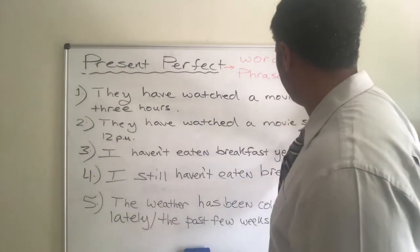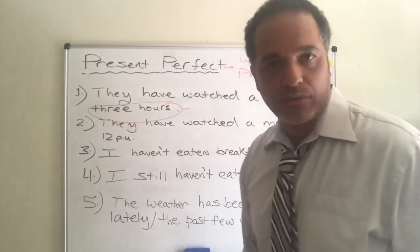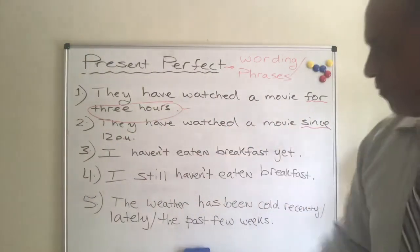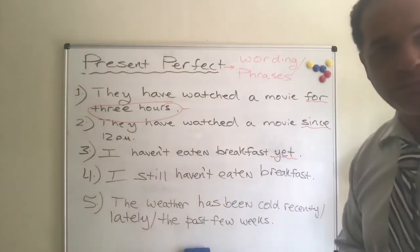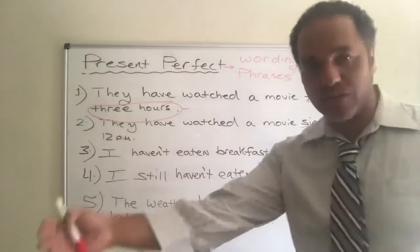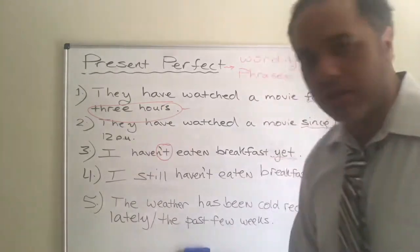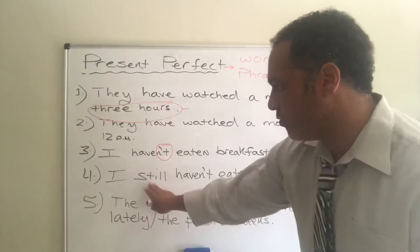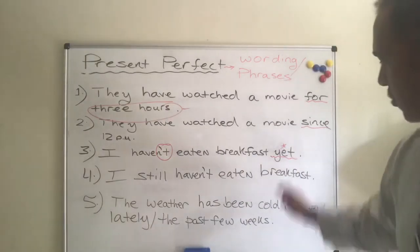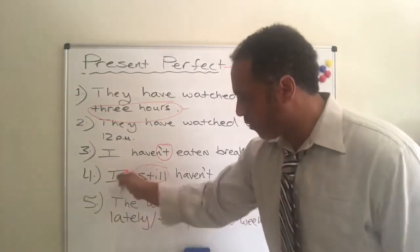When we use the word for, we are talking about an amount of time — for example, they have watched a movie for three hours. When we say since, it's a beginning time — they have watched a movie since 12 p.m. The word yet means something has not happened. For example, I haven't eaten breakfast yet — from waking up until now, no breakfast. Whenever we use yet, the sentence should be negative. We can also use still: I still haven't eaten breakfast. Notice the position: yet comes at the end, while still generally comes near the beginning, usually right after the subject.